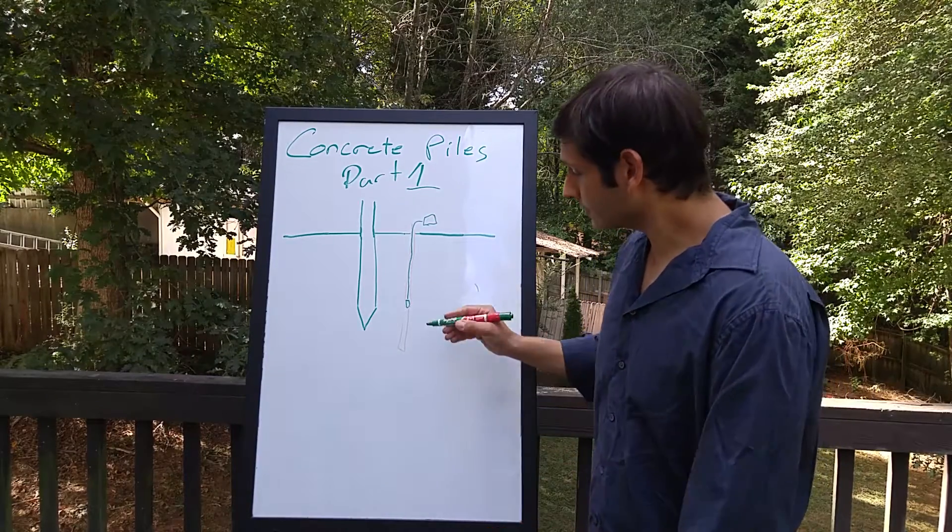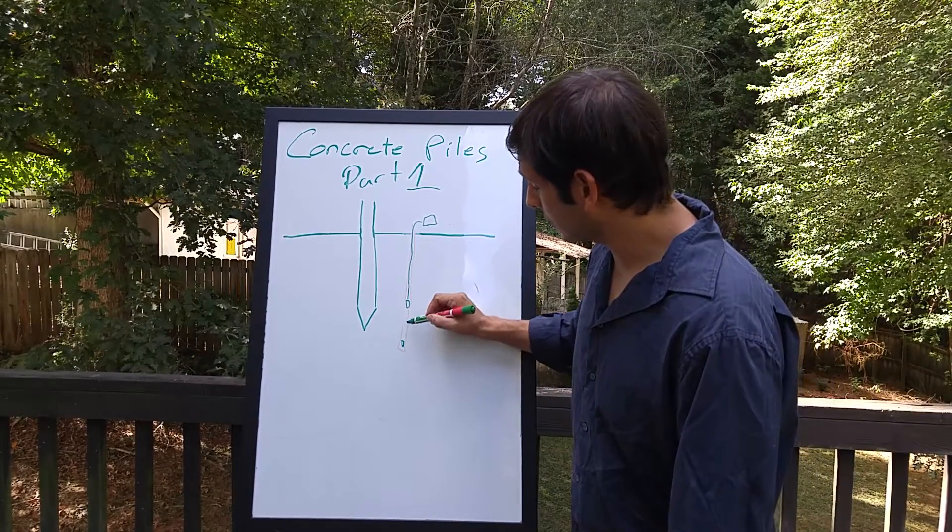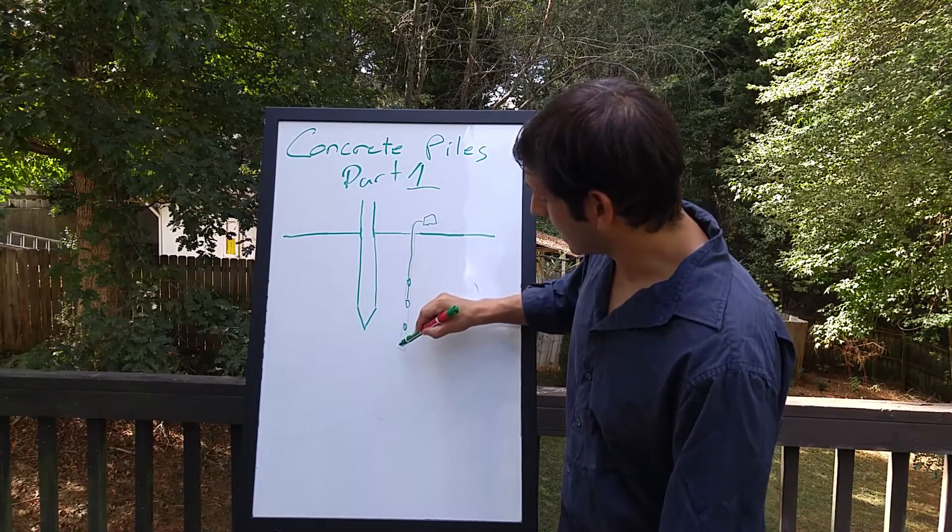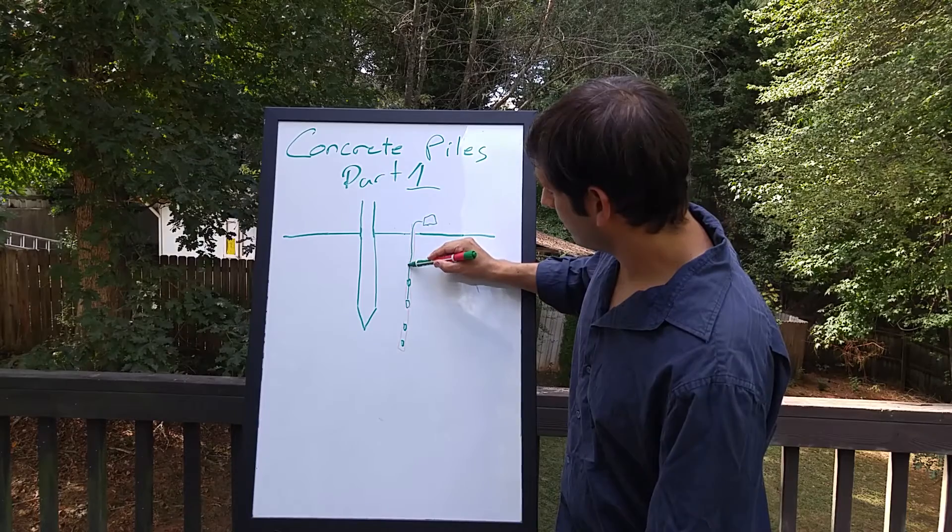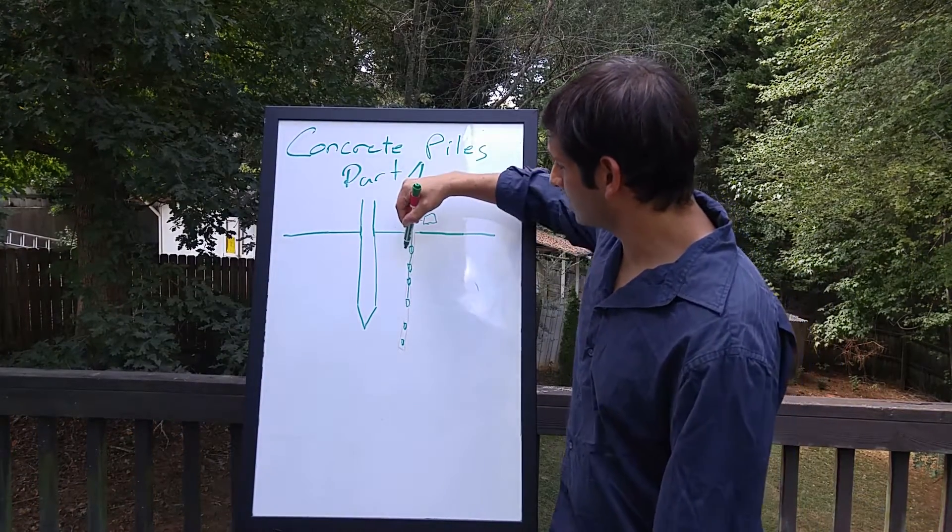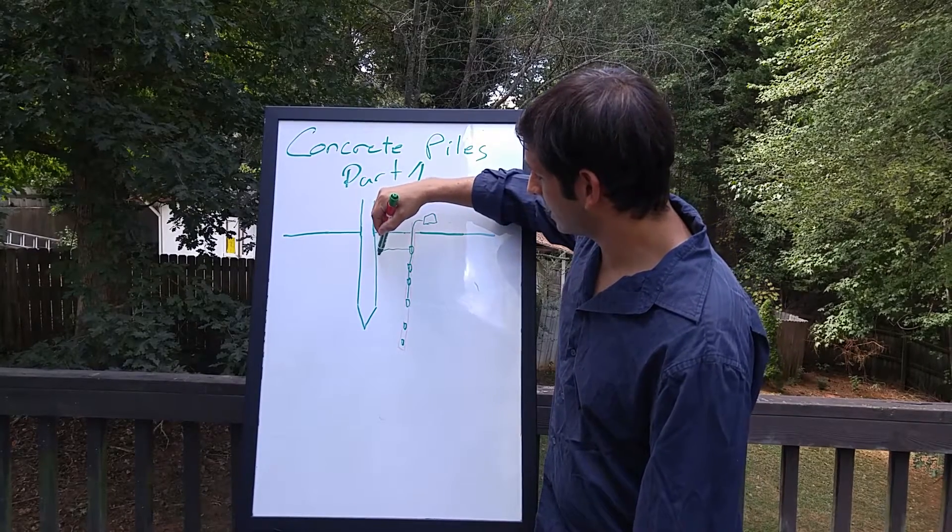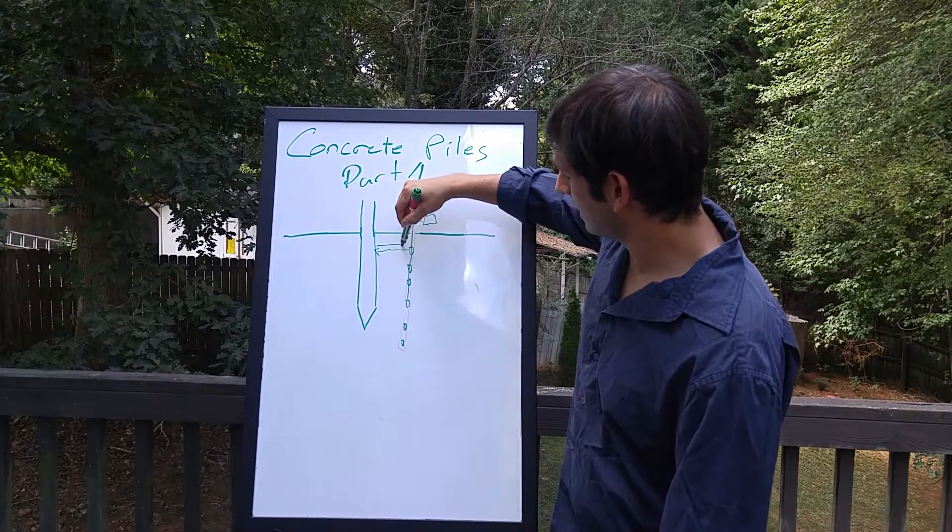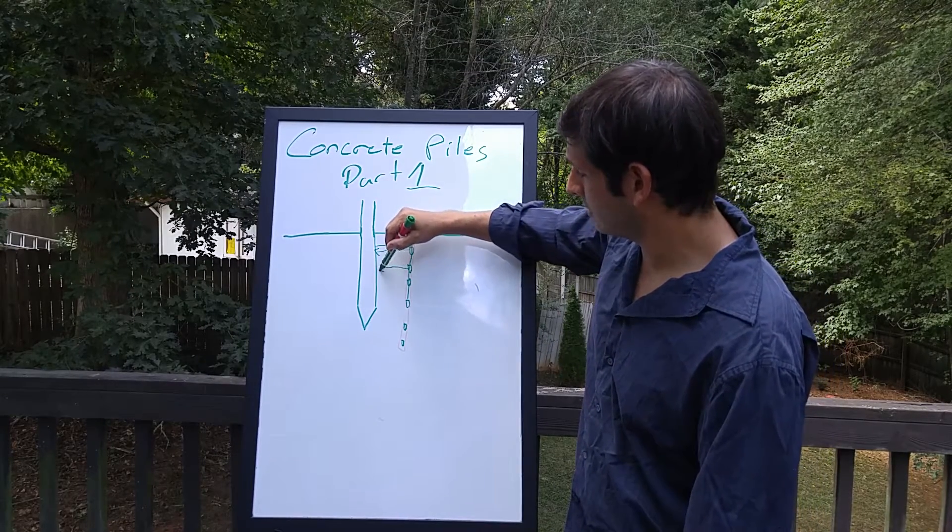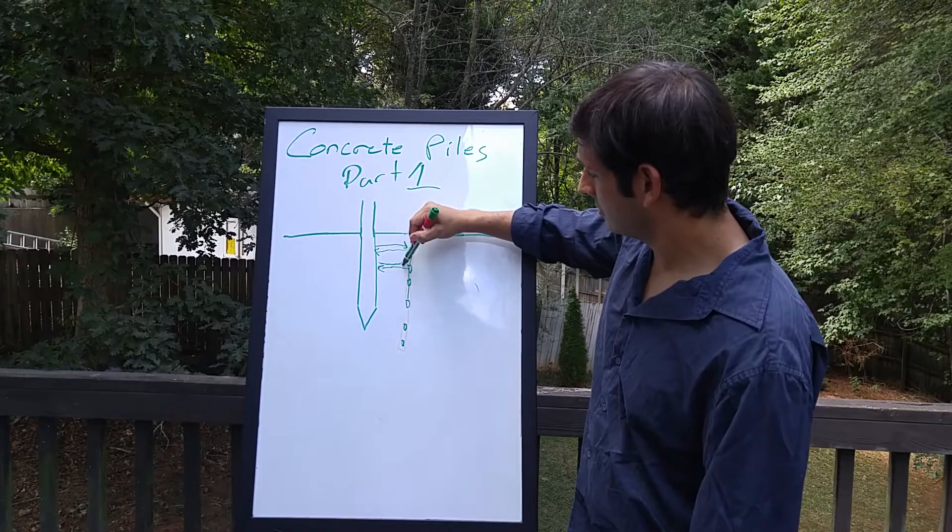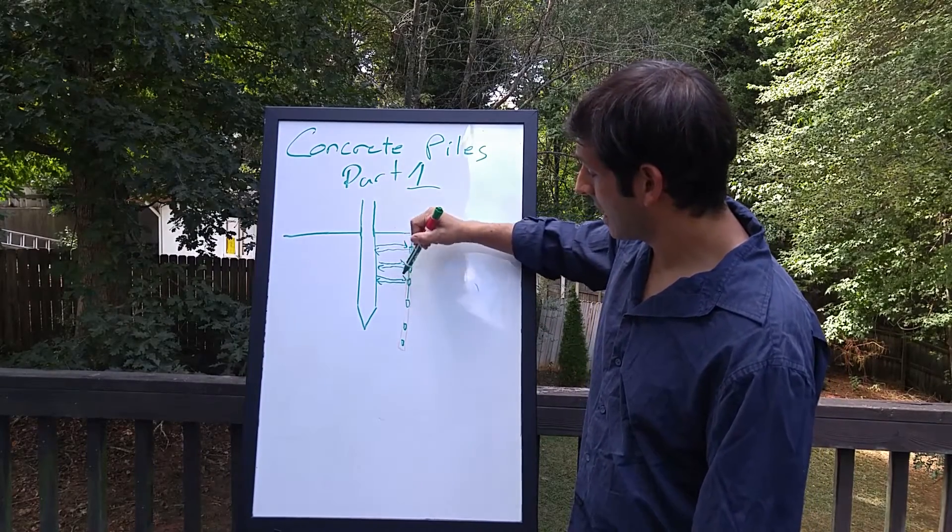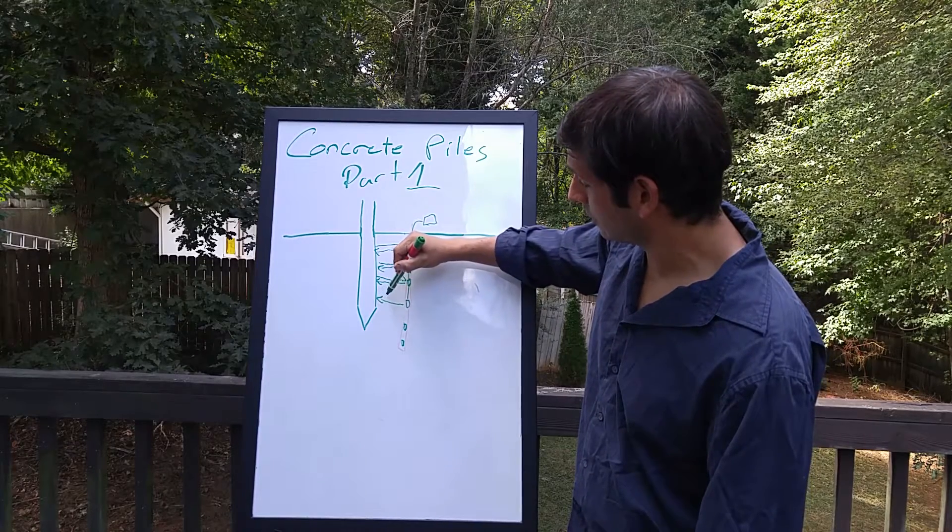So how does this work? Well, as the sensor is at different depths, it's putting out a signal. Here's your sensor depths. And so it puts out a signal, and as it puts out a signal, it gets a reflection off of your concrete pile. As it goes further into the ground, it gets a reflection off your concrete pile.